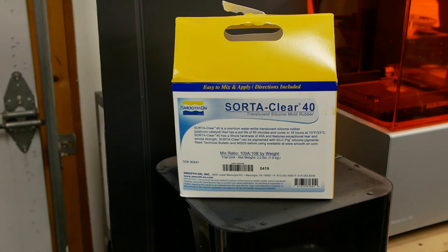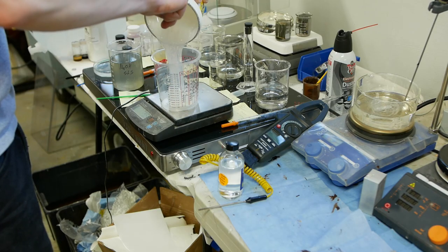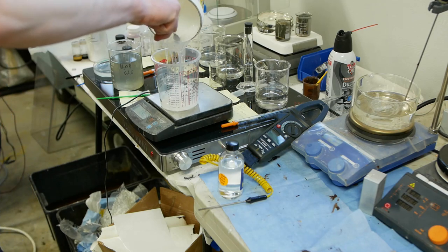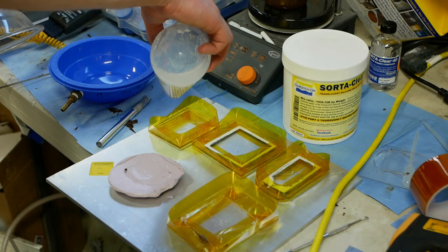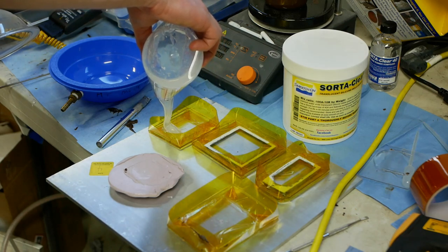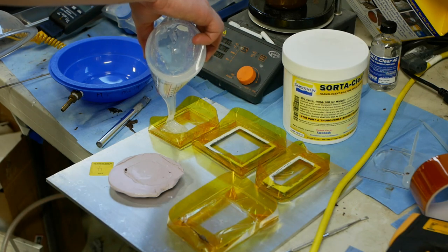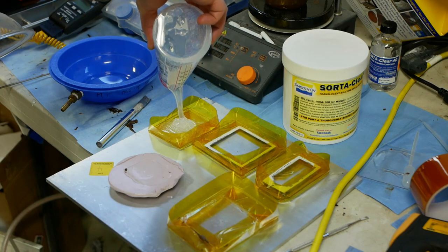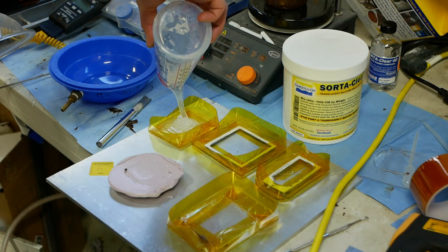I used this stuff called Sorta Clear 40 and the 40 refers to 40A durometer, which is sort of a medium soft durometer for silicone rubbers like this. And the only downside of using this stuff is that it's very slow curing. You will have to wait overnight for this to work, but that's also a benefit because it has a very long pot life. So if you mix up a bunch, I think you can spend like maybe 30 minutes, maybe even an hour using it before it starts to set up.